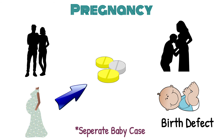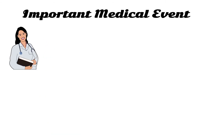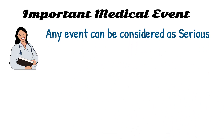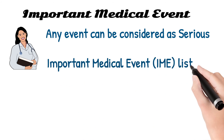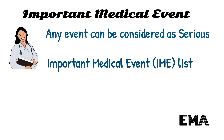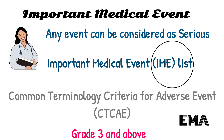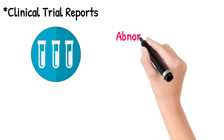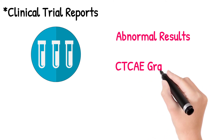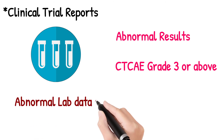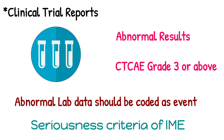Now let's move to the last seriousness criteria, which is important medical event — also called medically significant. The first criteria is based on the medical judgment of a doctor or physician; any event can be considered serious under this criteria. Another criteria is if the reported event is present in the Important Medical Event terms list, which is prepared and maintained by the European Medicines Agency — also called the IMA list. Another criteria is if the reported event meets Grade 3 and above in the Common Terminology Criteria for Adverse Events (CTCAE) list. In clinical trial reports, if any lab data is reported with abnormal results and the CTCAE grade is 3 or above, such abnormal lab data should be coded as an event and the seriousness criteria should be considered as important medical event or medically significant.